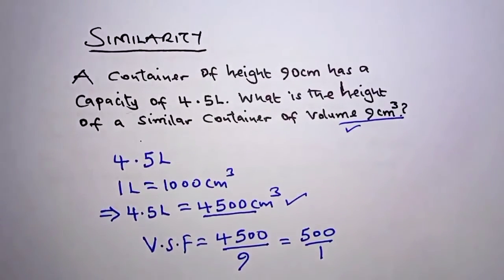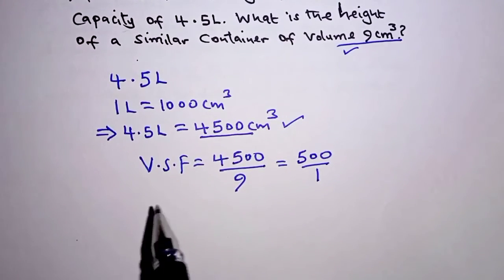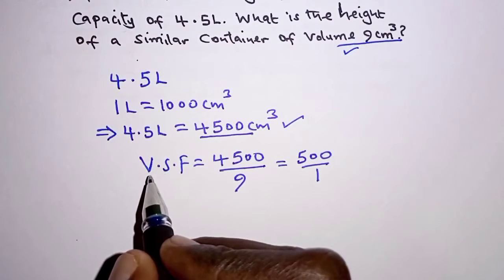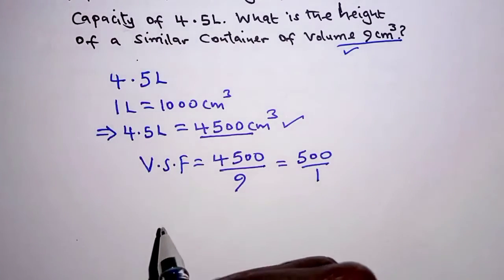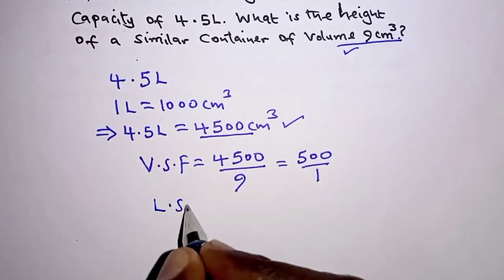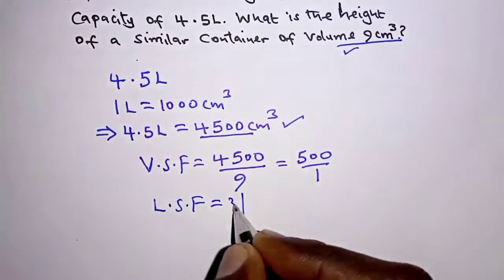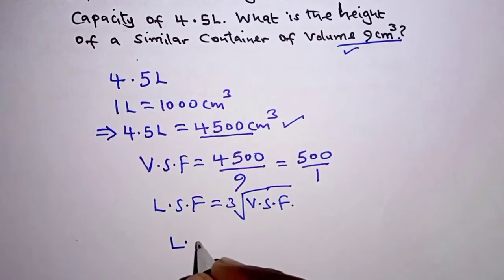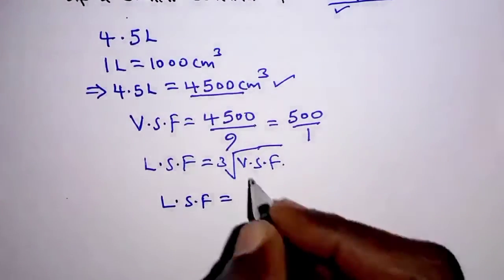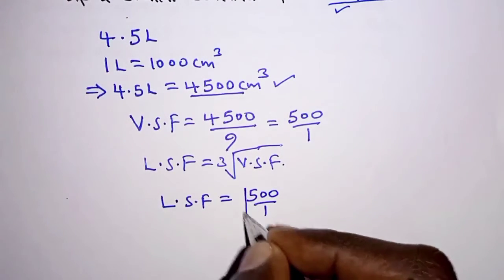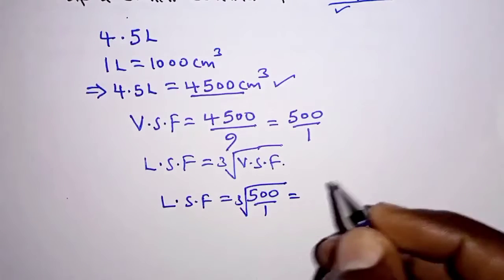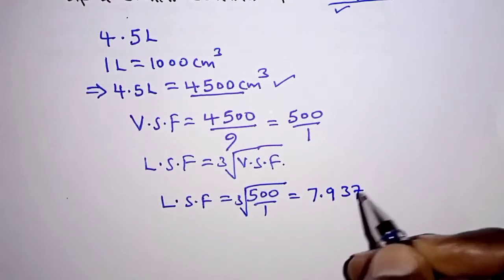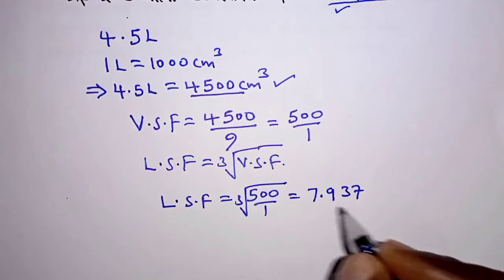We are required to determine the height of the similar container. Height is a length, so we are going to use the linear scale factor. The relationship between the linear scale factor and the volume scale factor is: linear scale factor equals the cube root of the volume scale factor. From what we are given, the linear scale factor is the cube root of 500 over 1.